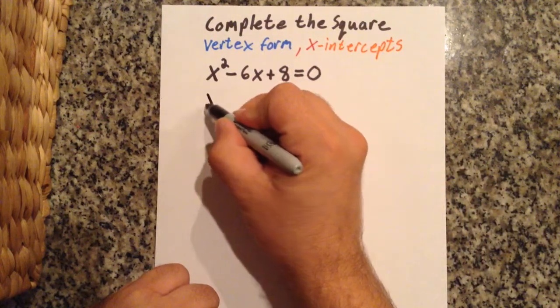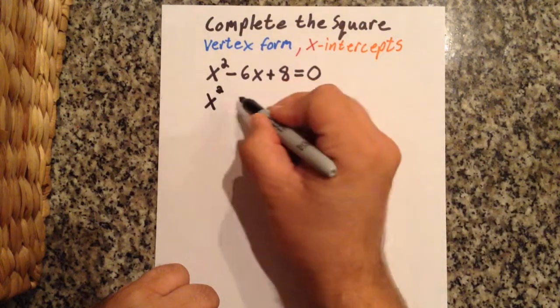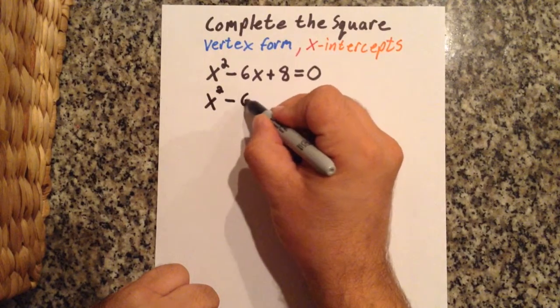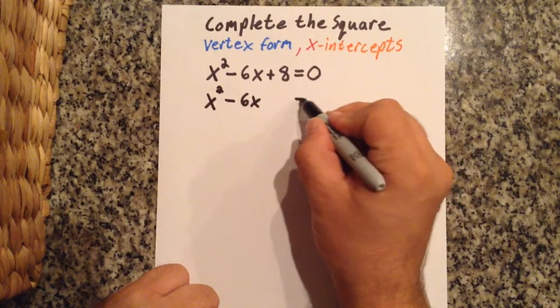Okay, what we're going to do is complete the square and we're going to find the vertex form and the x-intercepts.